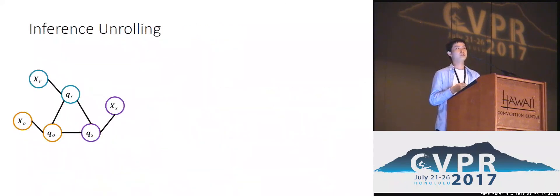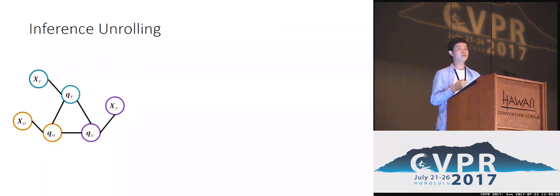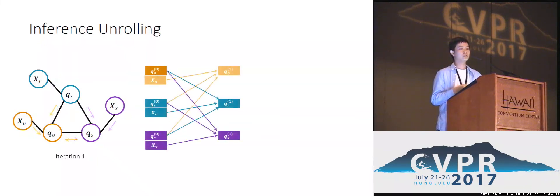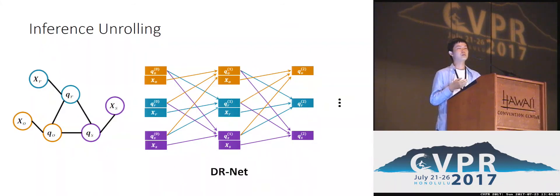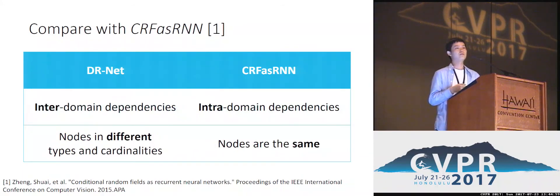To overcome these limitations, and inspired by recent trends, we decide to unroll the inference procedure of CRFs. The inference procedure of CRFs is an iterative updating procedure, and each iteration can be represented using a set of computing layers. So we unroll the inference procedure into a neural network, which we refer to as DRNet. Compared to traditional CRFs, DRNet can be trained discriminatively and can be easily combined with the feature extraction network in an end-to-end manner. It is worth noting that DRNet captures inter-domain dependencies and the nodes can have different types or cardinalities.